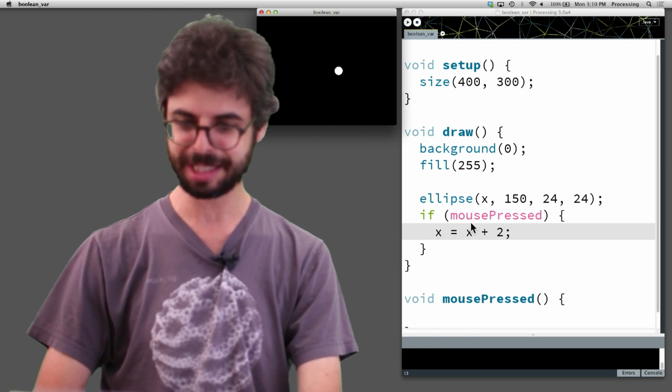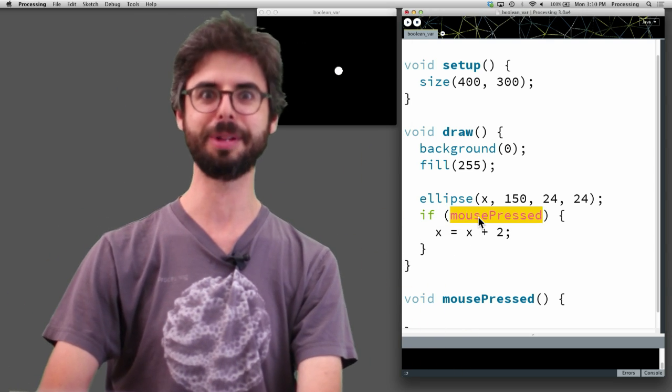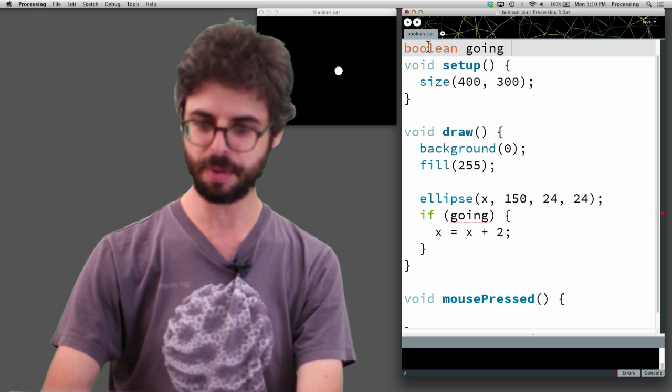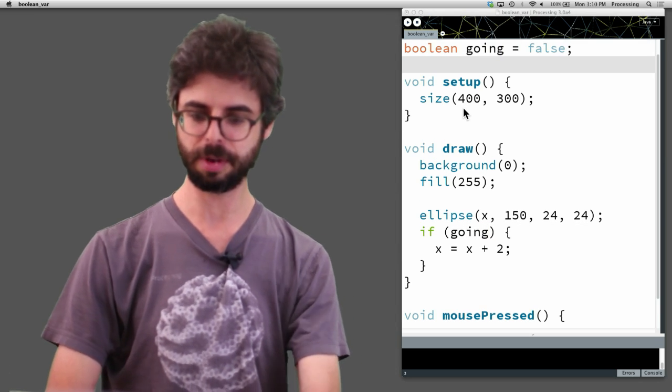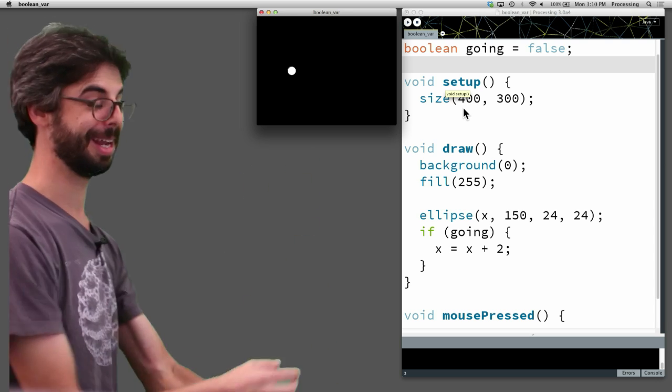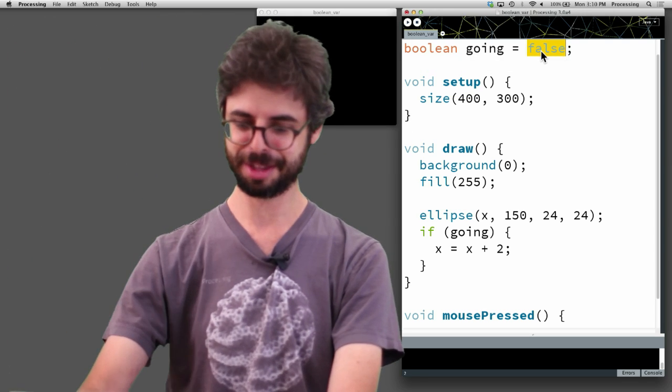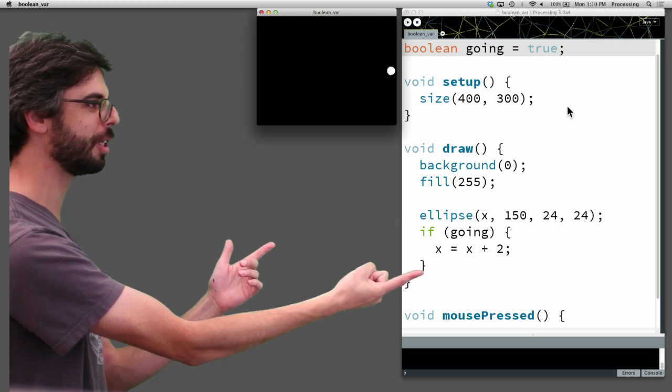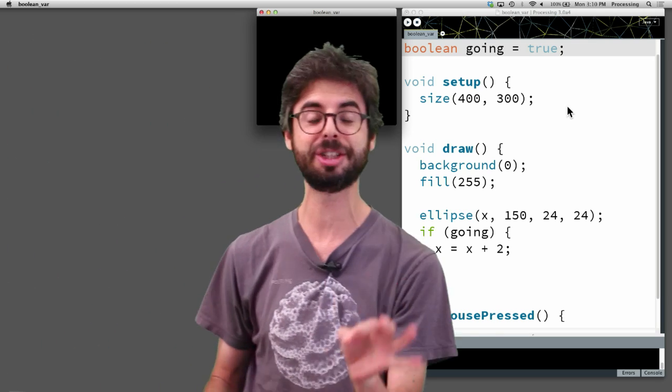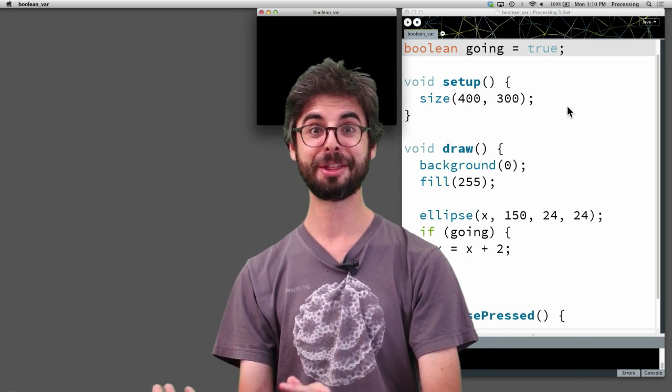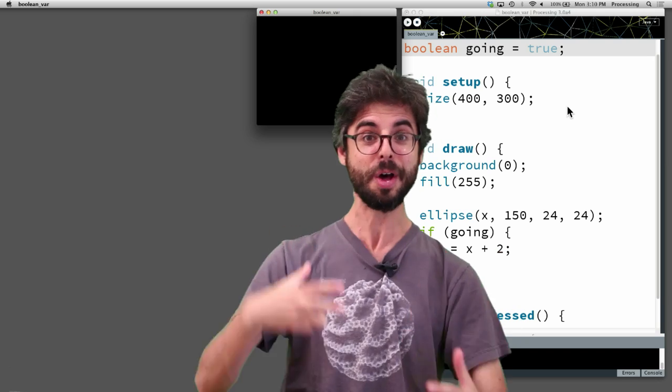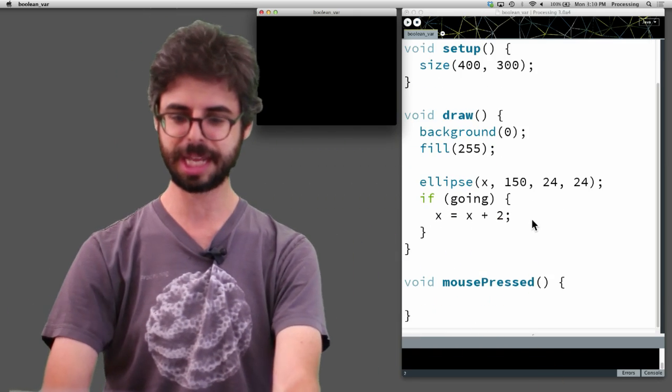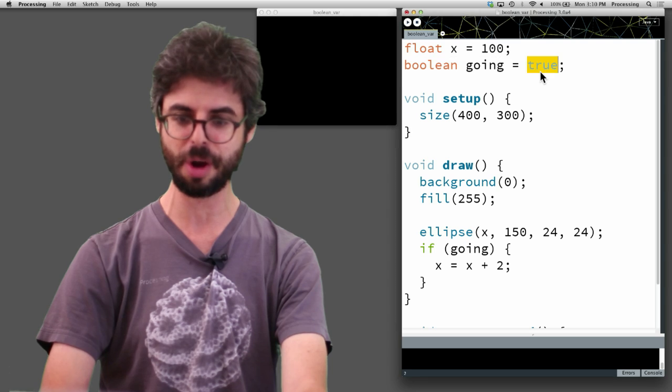So to do that, what if I made up my own variable like going? And we say Boolean going equals false. I'm going to run this code. It's not moving. Now, if I change the value of going to true, it's moving because going is true. So this code is being executed. So now all I need to do is change the value of going from false to true the moment that I want the circle to start moving when I click the mouse. So in this case, right here, let's start with going as false.